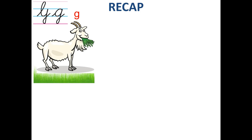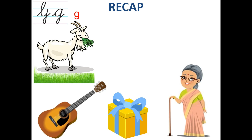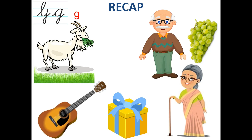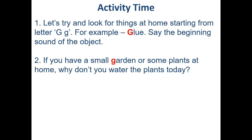What is the color of the grass? Green! G — guitar. G — gift. G — grandmother. G — grapes. G — grandfather. And G — garbage. Garbage should always be thrown in a dustbin.